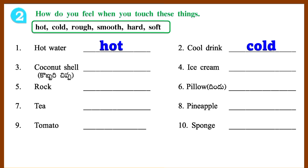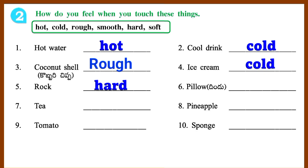2. Cool Drink — Cold. 3. Coconut Shell — Rough. 4. Ice Cream — Cold. 5. Rock — Hard. 6. Pillow — Soft.